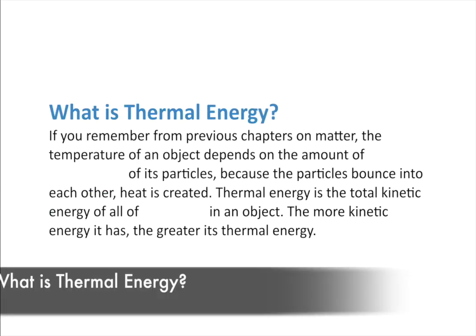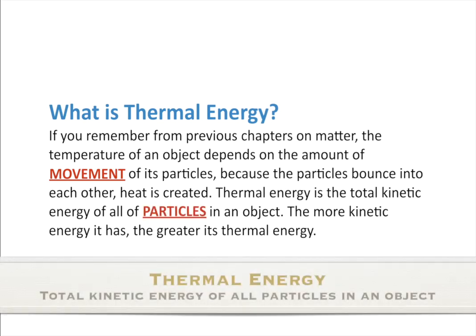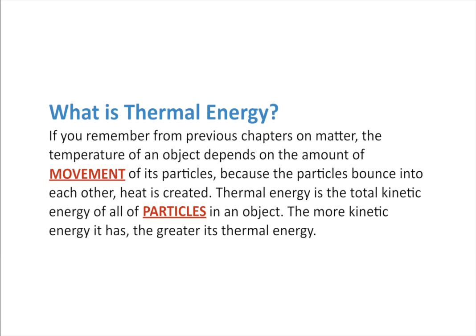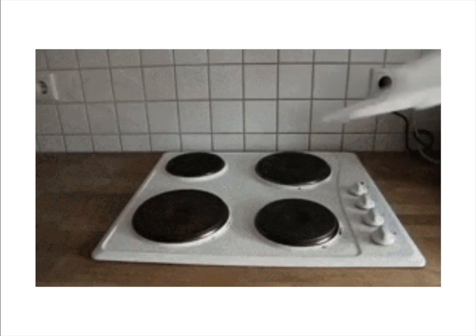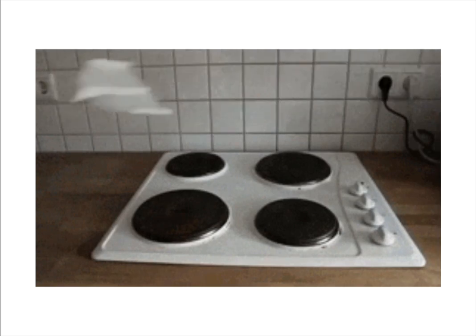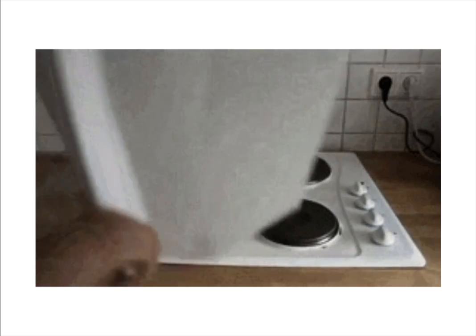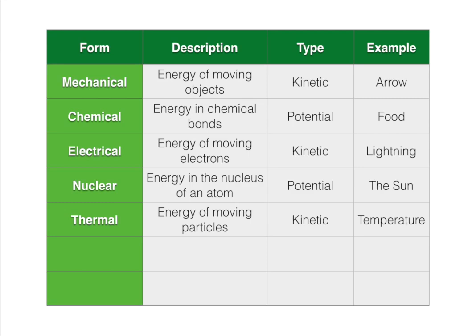If you remember from previous chapters on matter, the temperature of an object depends on the movement of its particles — the faster they move, the higher the temperature. Because the particles bounce into each other, heat is created. Thermal energy, or the total kinetic energy of all particles of an object, is a form of kinetic energy. Heat is kinetic energy. We have a paper airplane above an electric range, and the heat from the air is rising and allowing it to continue to fly because the heat is bumping into the particles of the air, making them move faster. Thermal energy is the energy of moving particles; it is kinetic energy, and temperature is an example of thermal energy.